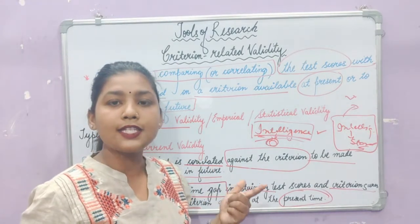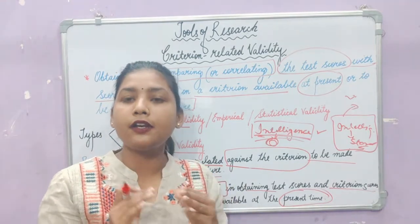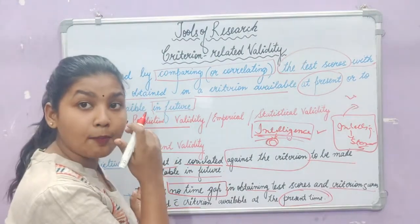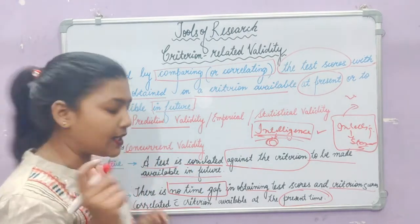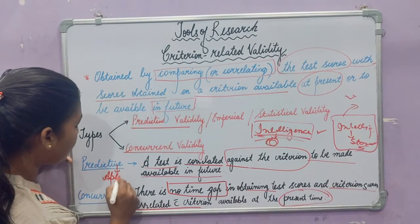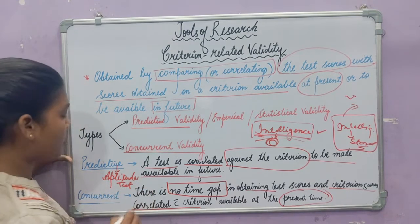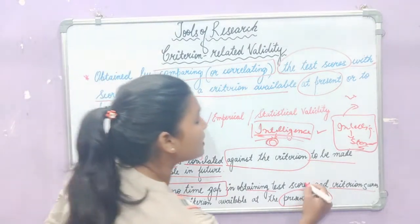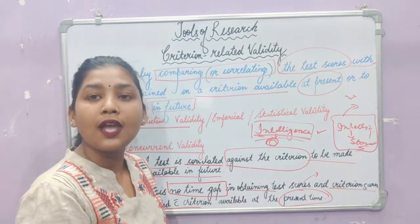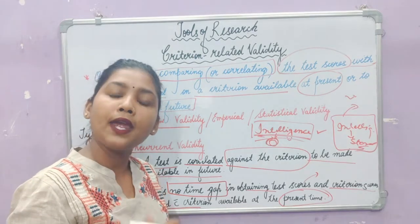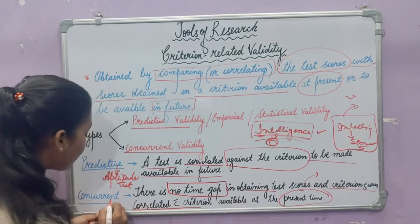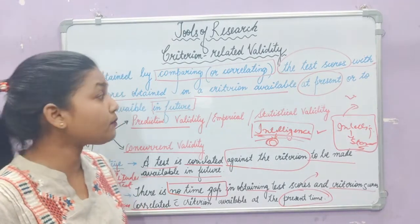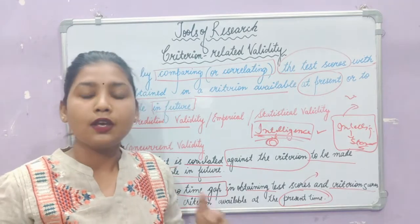Remember that predictive validity is more closely related to the aptitude test. And when we talk about diagnosis — suppose we have to diagnose a child's performance — then we use concurrent validity. So in concurrent validity we do diagnosis, and in predictive validity we use aptitude tests.